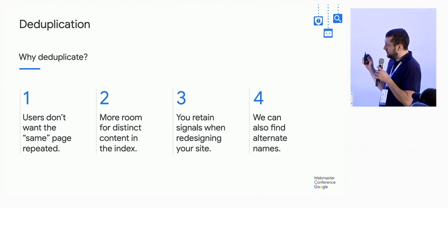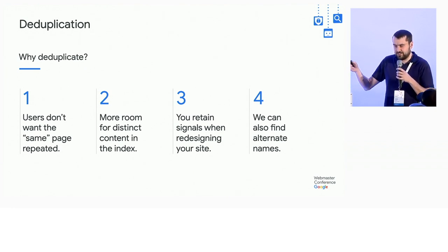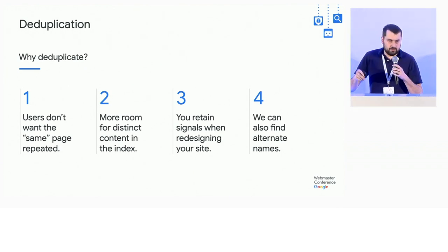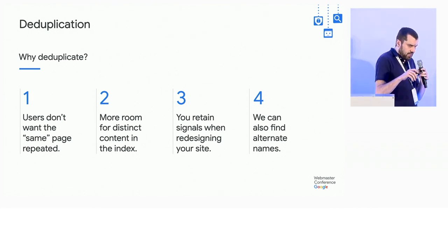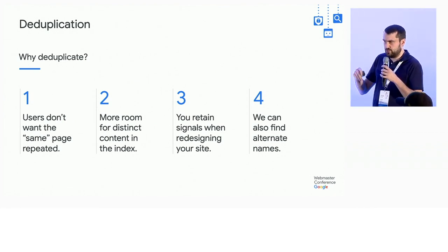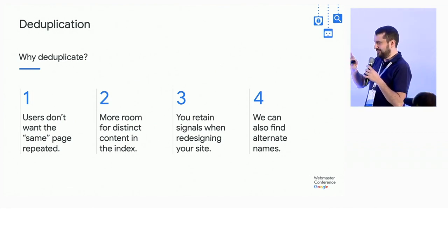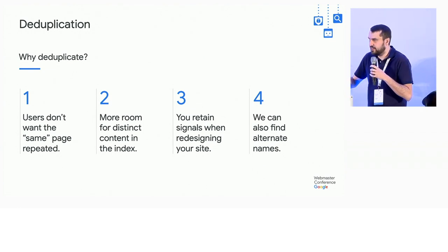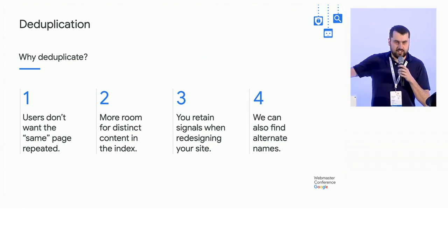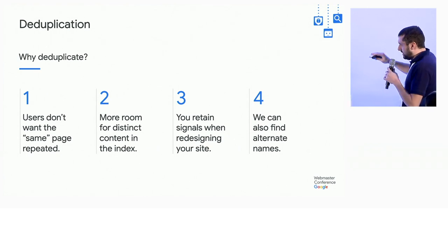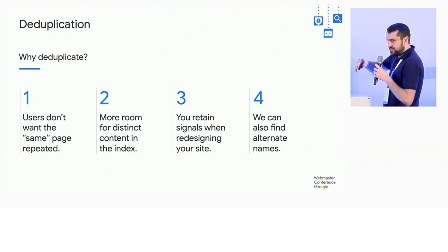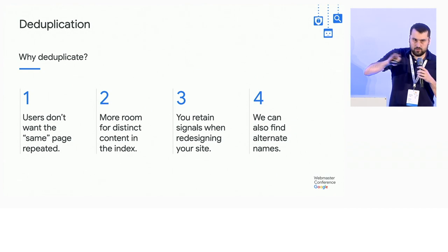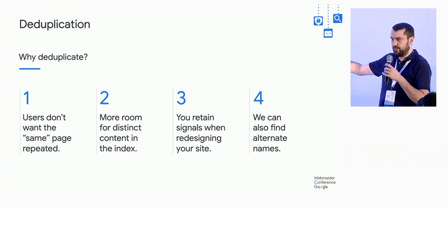The last thing we get out of this is what we call alternate names. These days it's used mostly for localization, but the older use is if you wanted to rebrand your site. For example, if Larry decides he's tired of Google and wants to fold it into Alphabet, redirecting Google.com to the Alphabet page — we can still serve a search for Google with Google.com because we'll know that Google is now an alternate name for Alphabet.